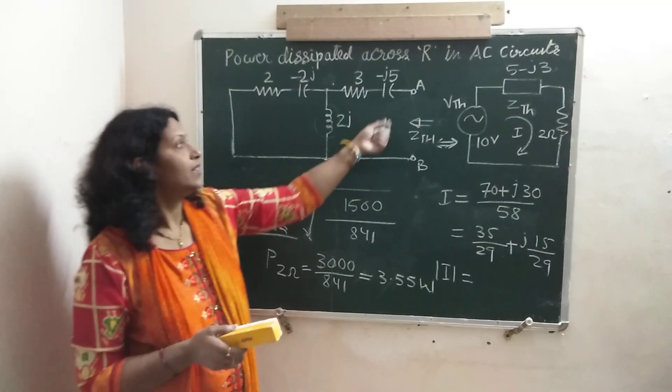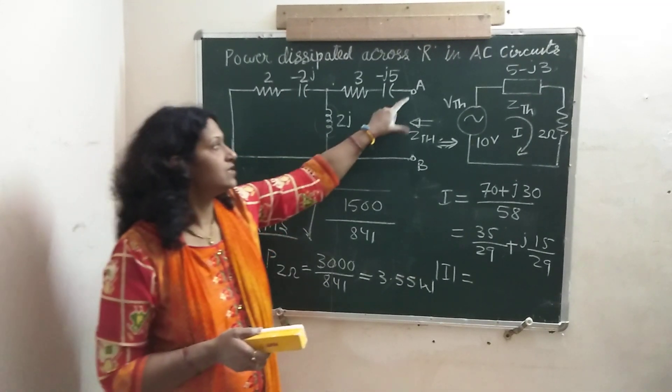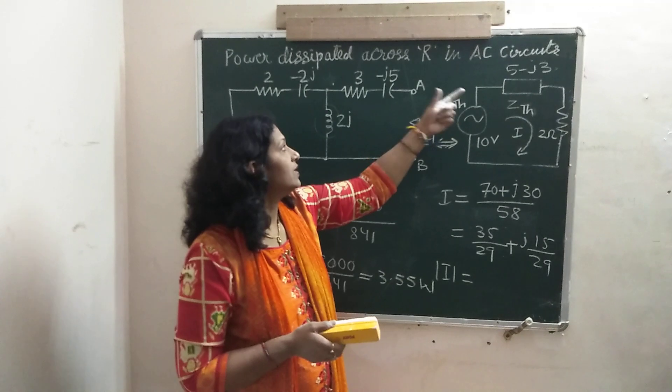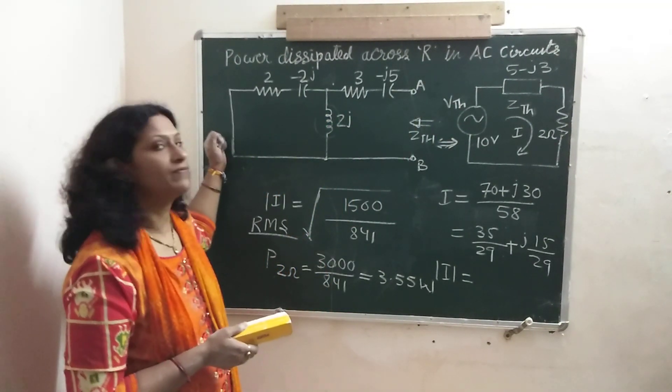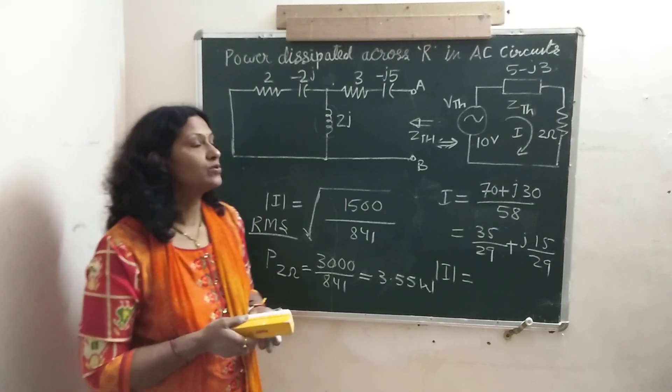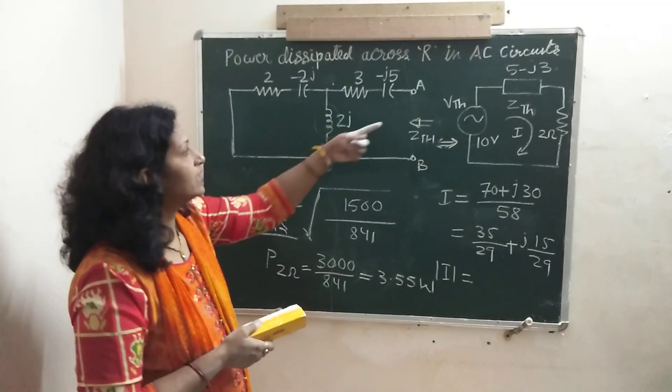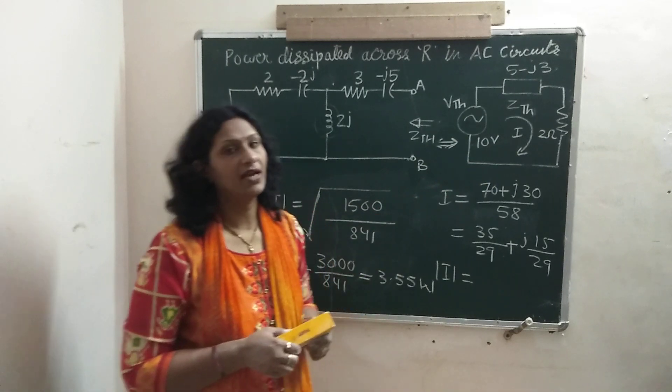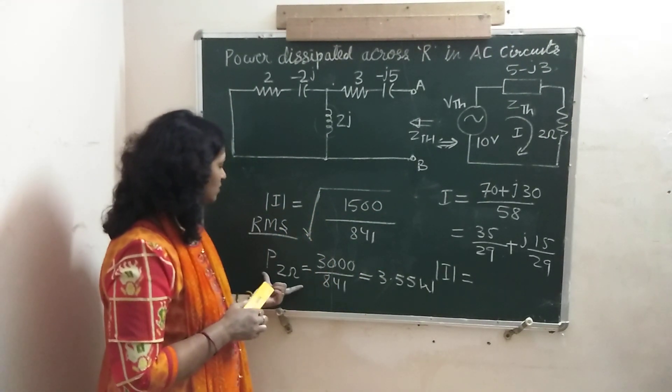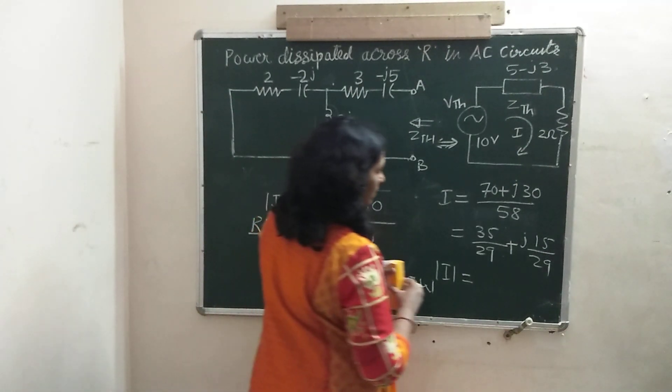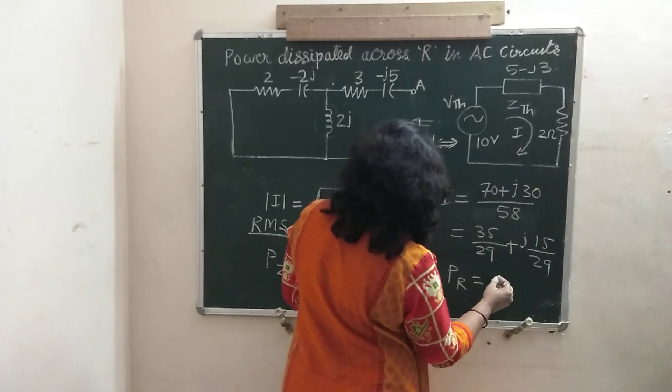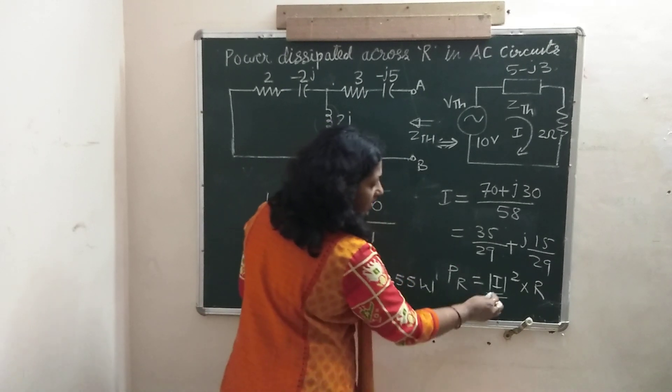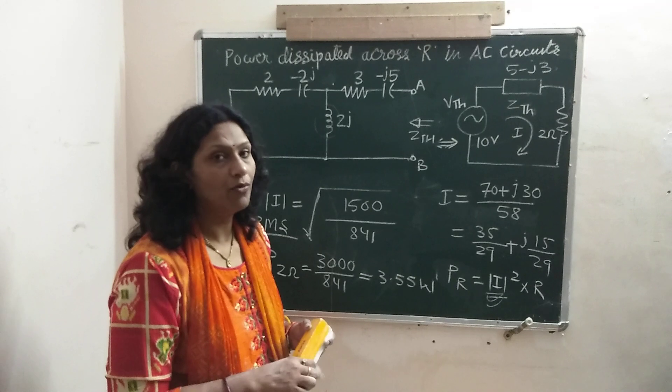So this is the way to find power across any resistor connected in the circuit. First, remove that resistor by open circuit and then find VTH and next step to find ZTH, short circuiting if voltage source is there and open circuit if current source, independent current source is present over there. And then find the current, connect the resistance where you want the dissipated power in series with that circuit and find the current and using that current we can find the power. What is the formula for power? Power across R, any resistor is equals to I modulus square multiplied by that resistance. And this is nothing but the current in the polar format, the modulus value of the polar format. Thank you.